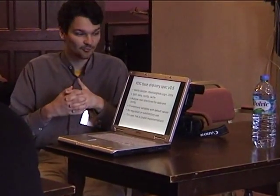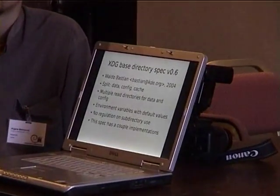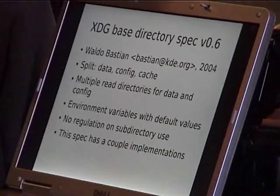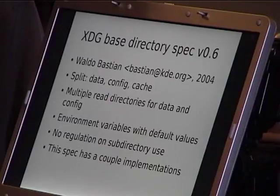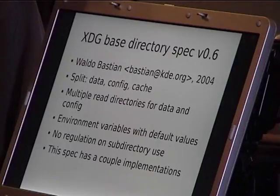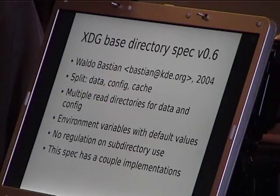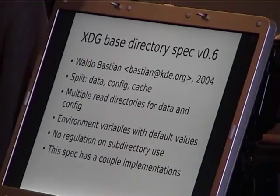When I proposed this idea on my blog, people pointed me to the freedesktop.org XDG base directory specification, currently at version 0.6, which hasn't changed since 2004. It specifies splitting the user home directory data into data, configuration, and cache information. It has very detailed and complex information about how there could be multiple directories for user data and user configuration, and what priorities they all have.